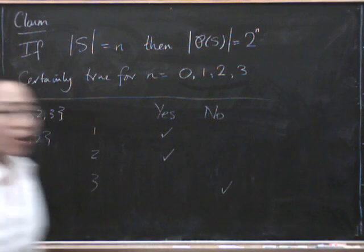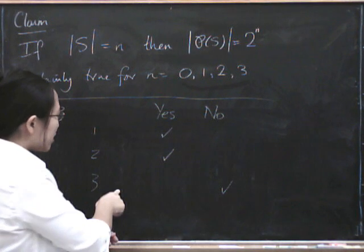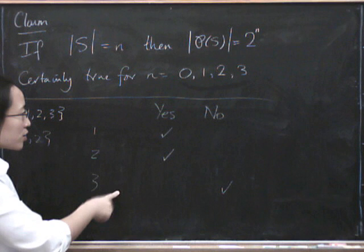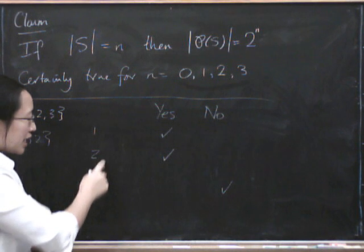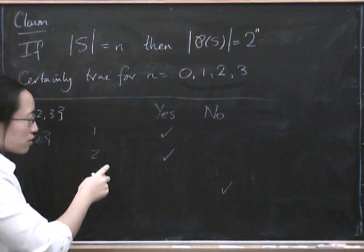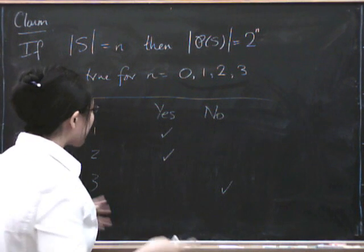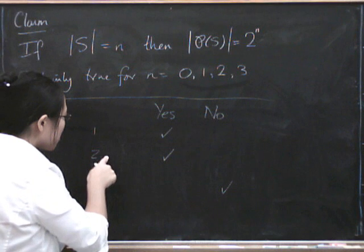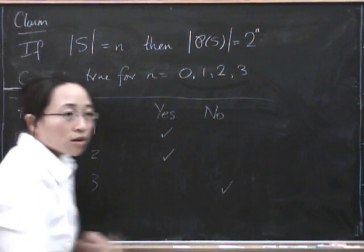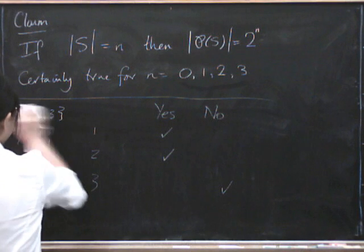So how many possible ways are there of choosing a yes or a no for each of these? Well, what that's saying is you have a choice of two possibilities for each element. Yes or no. And so how many ways of doing that are there? Well, there's two for each element, so it's 2 times 2 times 2. So it's 2 to the power of n. Let's try and write that down formally.